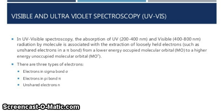Visible and ultraviolet spectroscopy. In UV-visible spectroscopy, the absorption of UV (200 to 400 nanometer) and visible (400 to 800 nanometer) radiation by molecules is associated with the extraction of loosely held electrons, such as unshared electrons in a pi bond, from a lower energy occupied molecular orbital (MO) to a higher energy unoccupied molecular orbital (MO*).